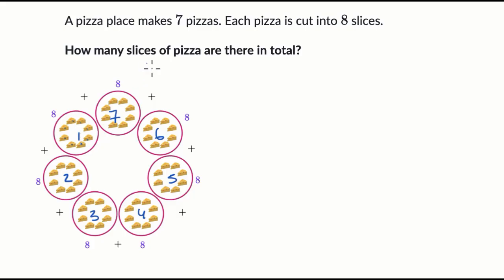So if you want to know the total number of slices, you're essentially going to add these seven eights together. Well, adding seven eights is the same thing as multiplying eight by seven or seven by eight.